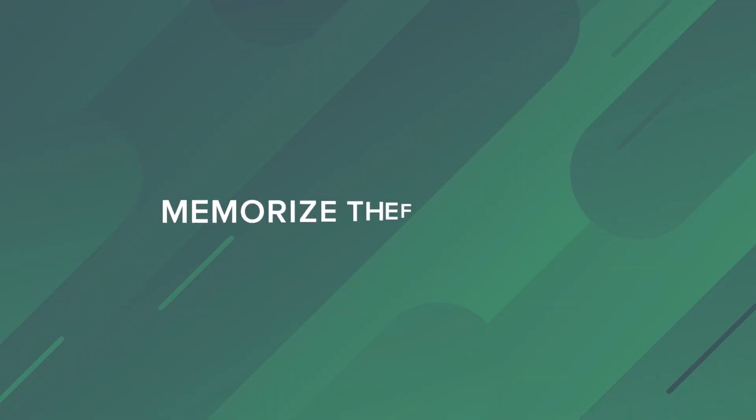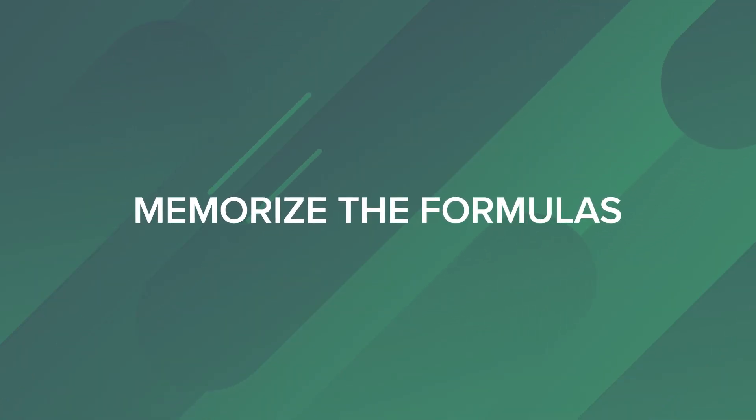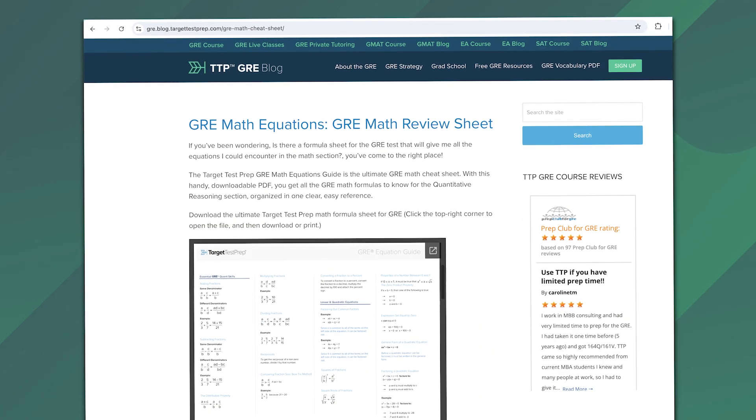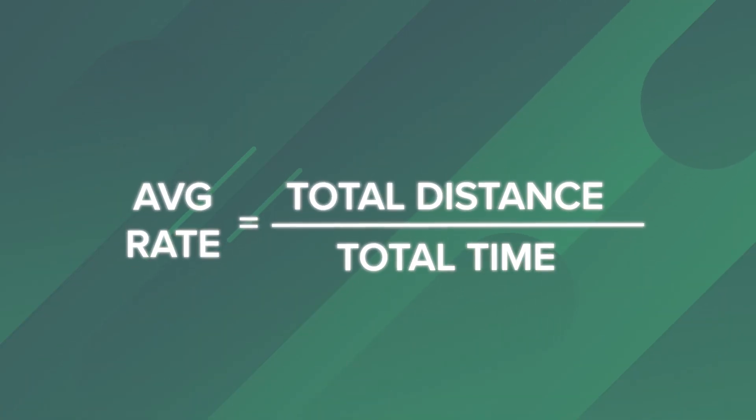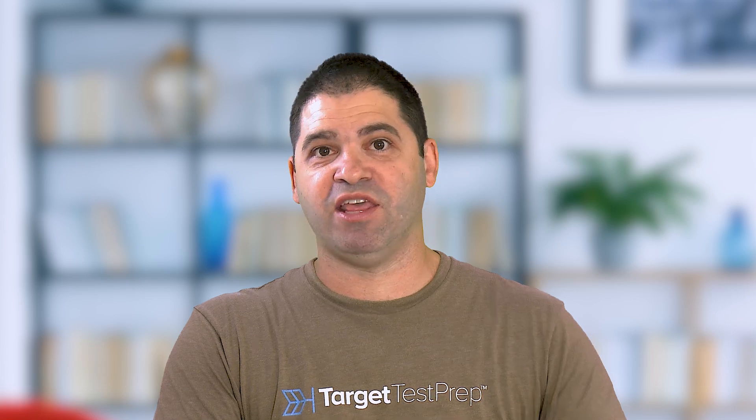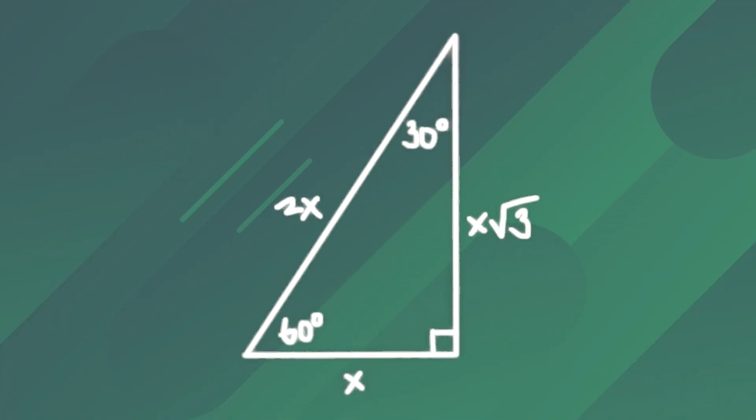Tip number four — and you've heard me say this in so many videos — get the formulas memorized. Please get them memorized. We have them all over TTP, in our downloadable equation guide on our blog, and in our quant flashcards in the course itself. If you see an average rate question, you've got to know it's total distance over total time. If you're dealing with a 30-60-90 right triangle, you need to know the ratio of sides is X, X root 3, to 2X. If you don't have those formulas down, the whole quant section is going to be a slog.